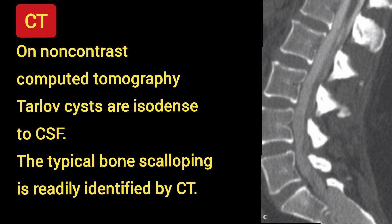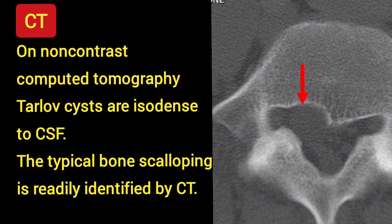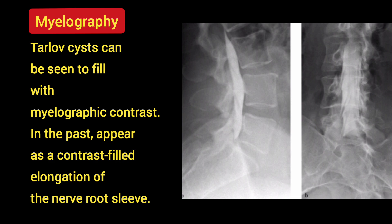On non-contrast computed tomography, Tarlov cysts are isodense to CSF. The typical bone scalloping is readily identified. Tarlov cysts can be seen to fill with myelographic contrast, appearing as a contrast-filled elongation of the nerve root sleeve.